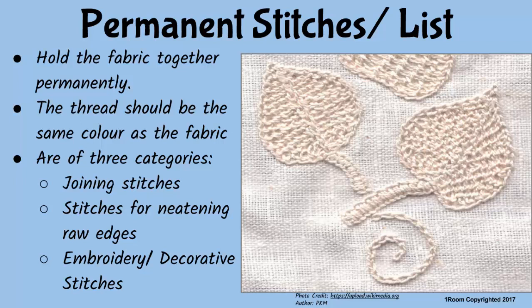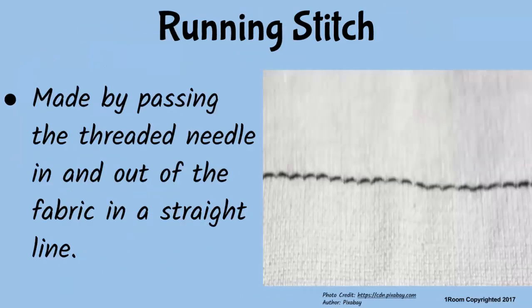Under this category we have the running stitch. Running stitches are made by basically passing the needle in and out of the fabric. More of the thread is seen on the upper side of the fabric than the down side. It is also known as the straight stitch.